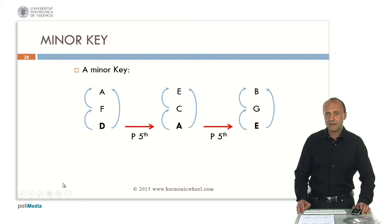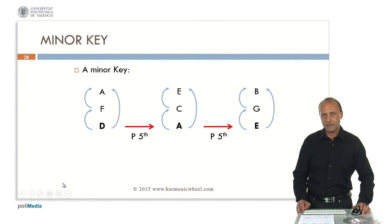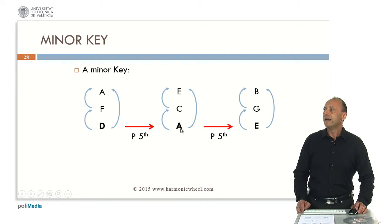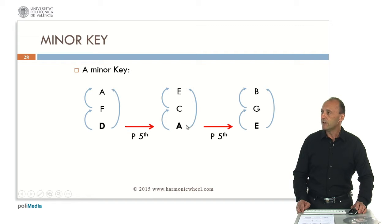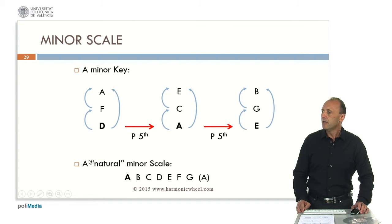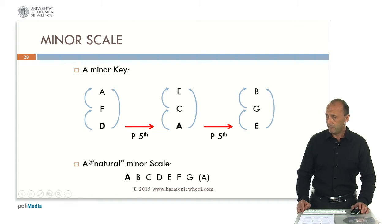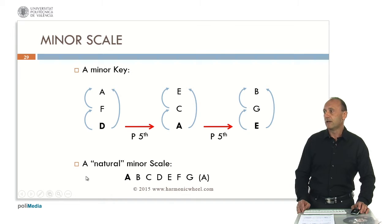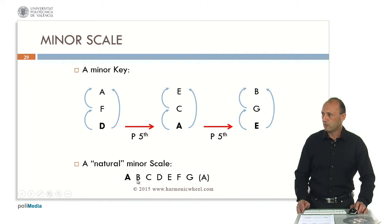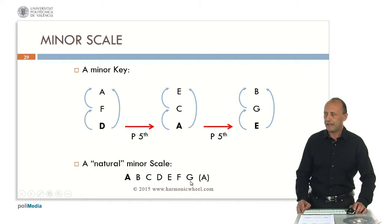With these notes — apparently they are nine, but two of them are repeated, so they are in fact seven notes — we have the A minor key, because we started with note A. If we sort out these notes by their pitch, we obtain the corresponding A natural minor scale, whose notes are A, B, C, D, E, F, G and again A.